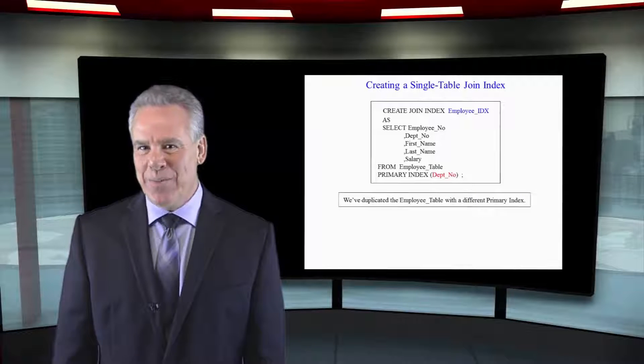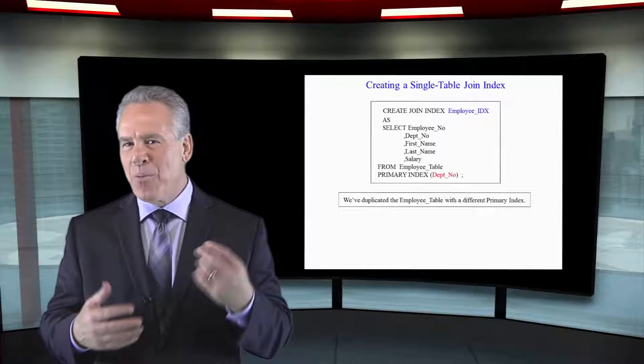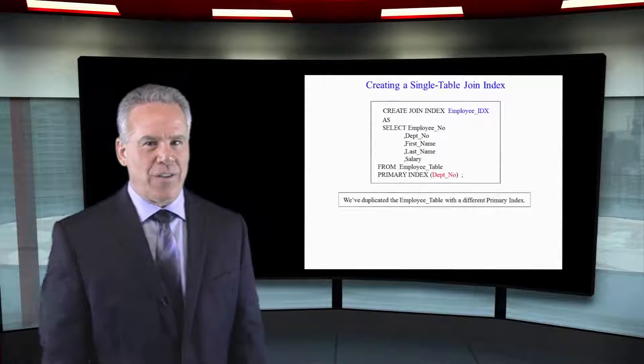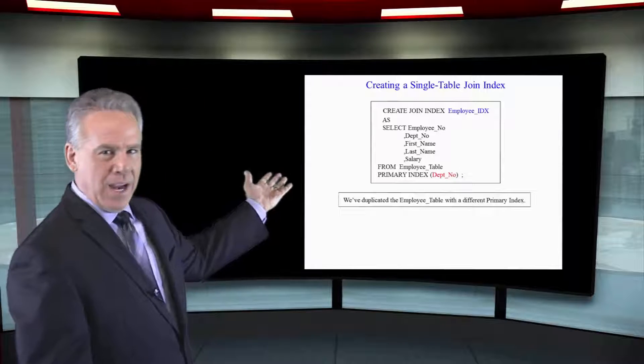This is a single table join index. When you first see this, you might say, why would I do that? But this is very clever in how this might work. Here we say create join index, give it a name, mpidx.